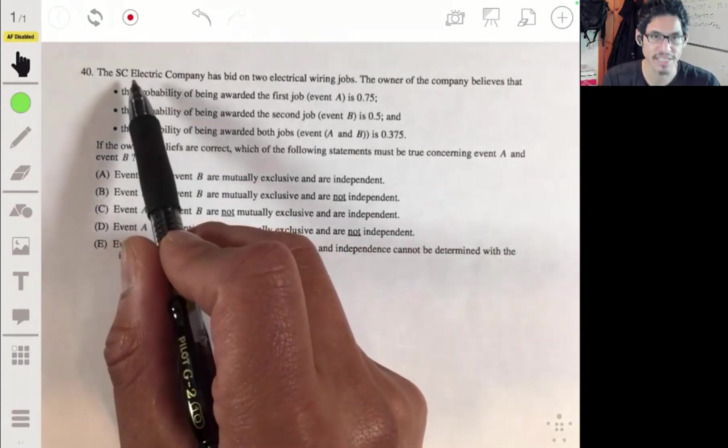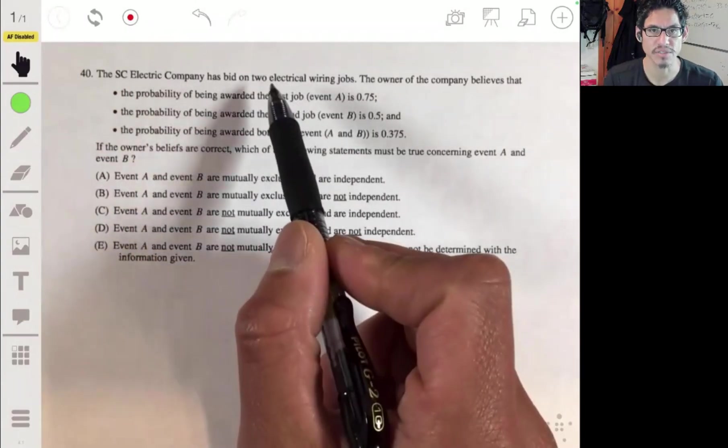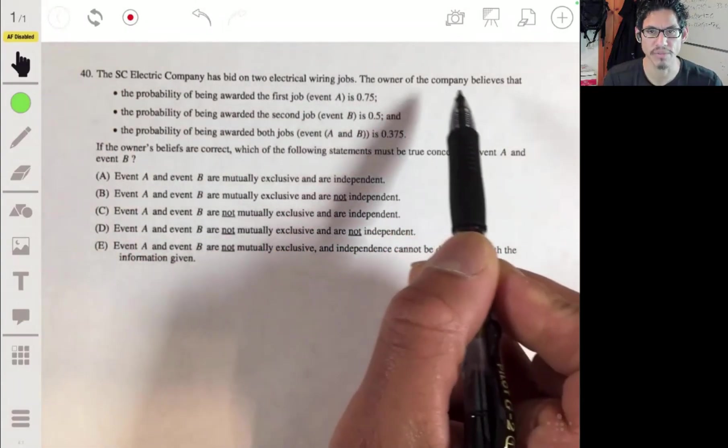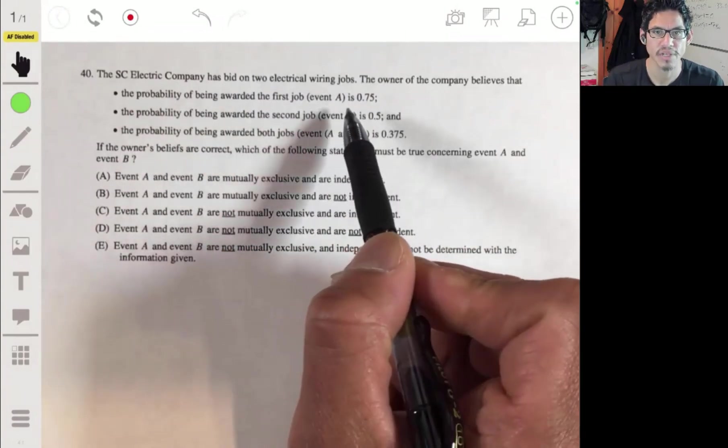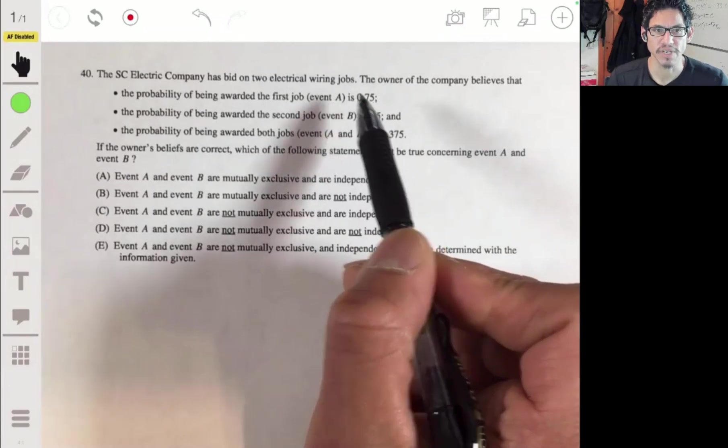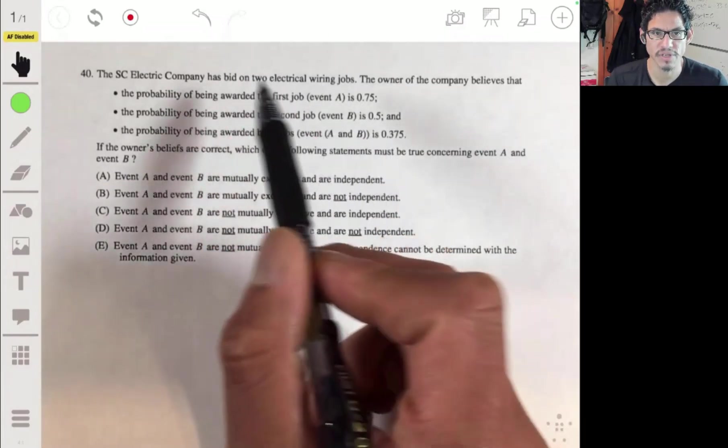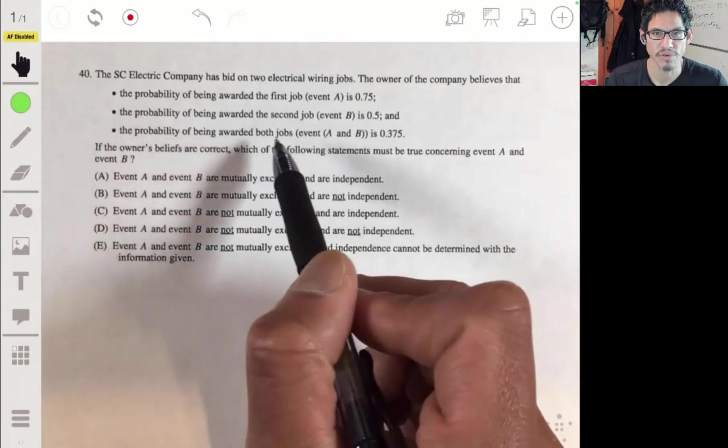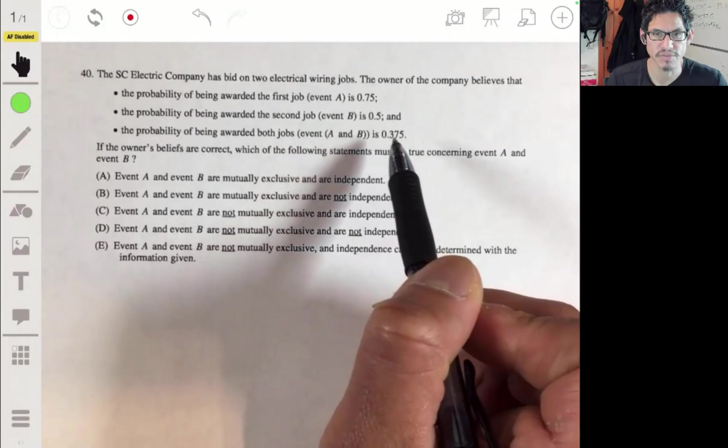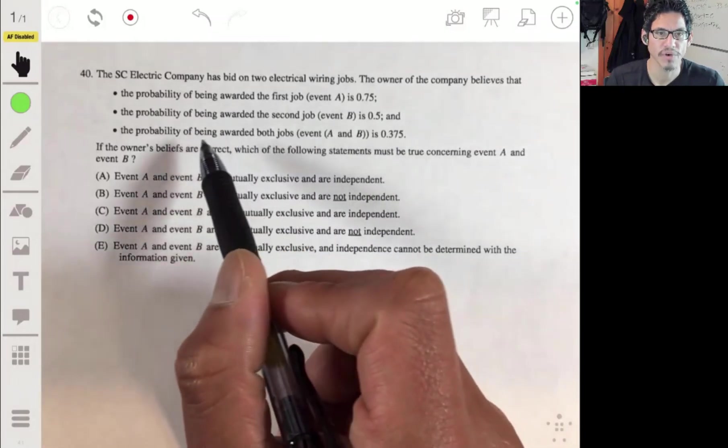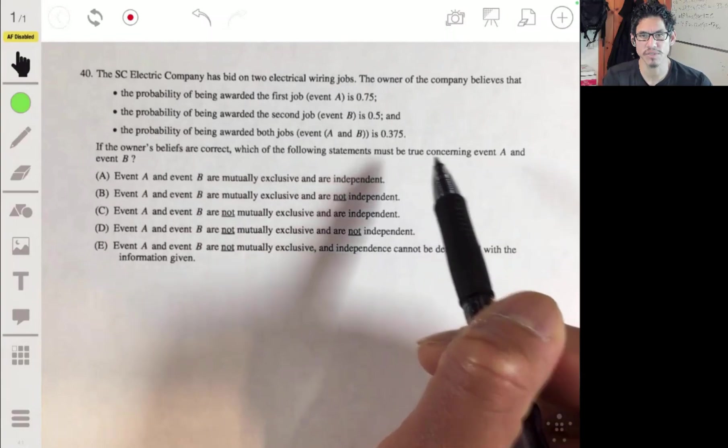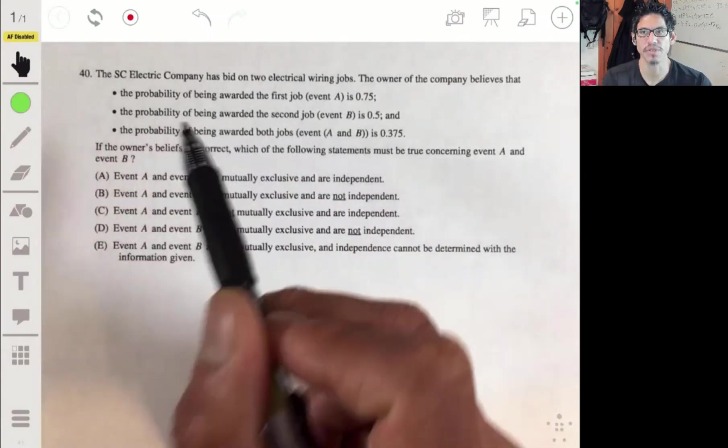Here we have the SC Electric Company has bid on two electrical wiring jobs. The owner of the company believes that the probability of being awarded the first job, which is event A, is 0.75. The probability of being awarded the second job, event B, is 0.5. And the probability of being awarded both jobs, A and B, is 0.375. If the owner's beliefs are correct, which of the following statements must be true concerning event A and event B?